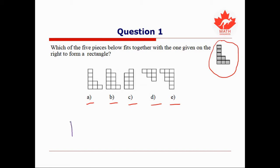A rectangle is something like a square, but we allow some of the sides to be longer. The top side and the bottom side have to be the same length, and the right side and the left side have to be the same length. So if I need to add some squares to this shape to make sure the top and the bottom are the same length, let's see — there are three squares on the bottom, so there should be three squares on the top too. I'm going to draw in two more squares there.